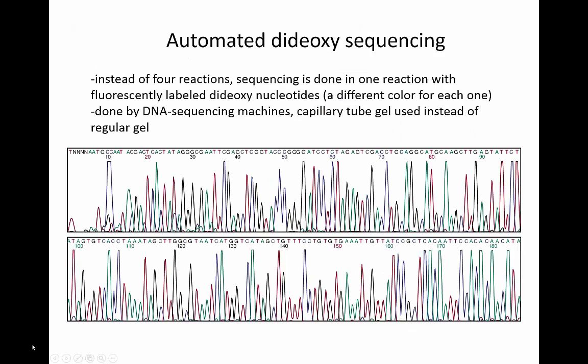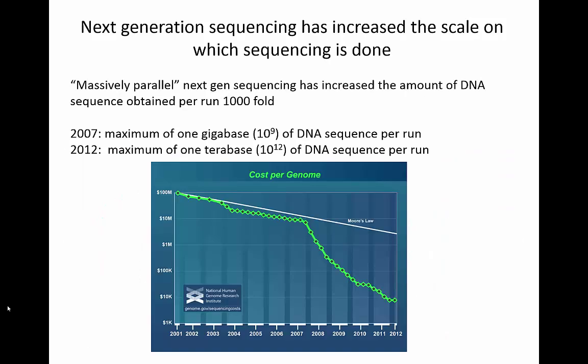Important improvements have been made to dideoxy sequencing. One early improvement was attaching a different fluorescent dye to each dideoxynucleotide, allowing all four reactions to be done in one tube instead of four. Machines then read the fluorescent signal after gel separation. More recently, a new kind of sequencing called next-generation sequencing was invented, which has vastly increased the amount of DNA that can be sequenced at one time.